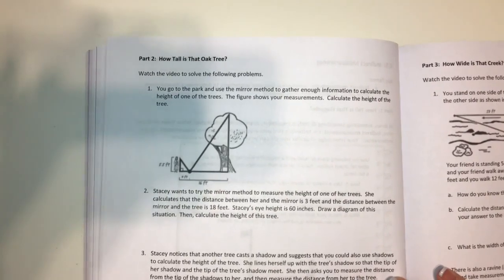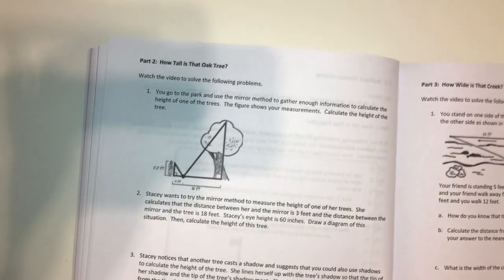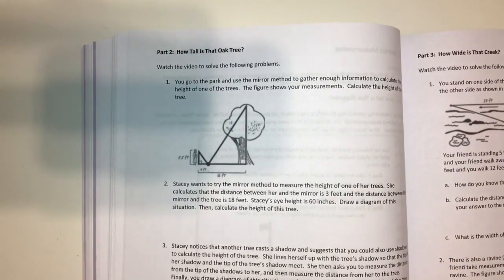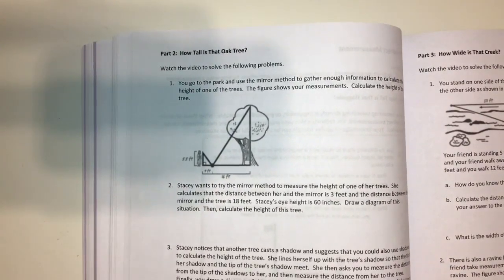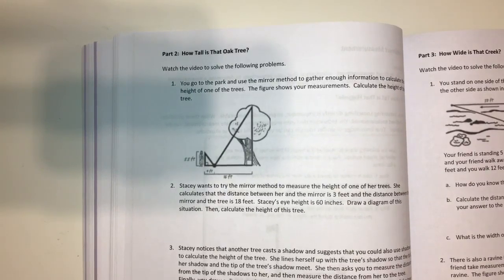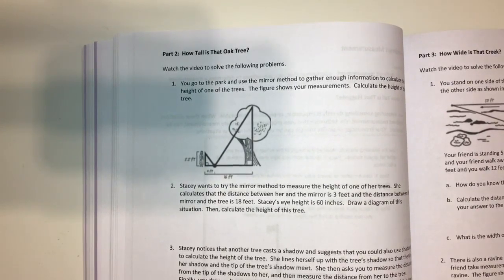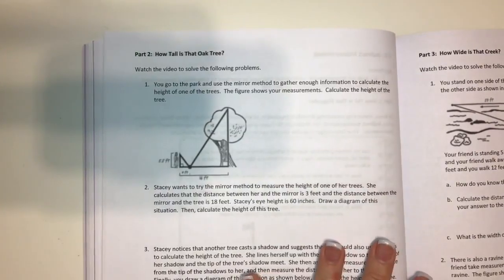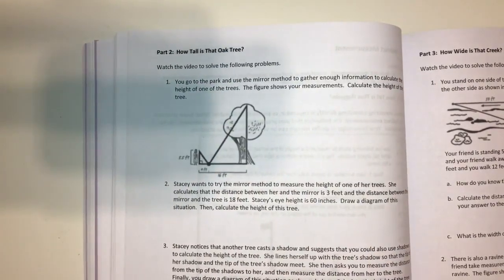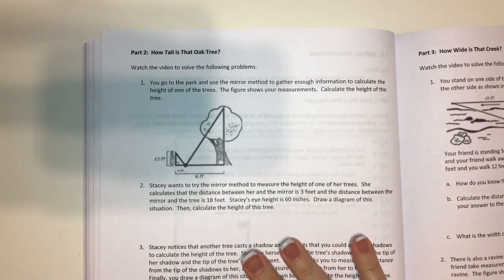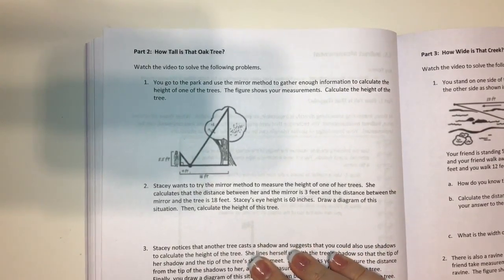So now we have some problems that are using indirect measurement. Indirect measurement is great because sometimes it's not very easy to get a ladder out and calculate and measure how long a tree is, or how tall a tree is. So we can use some indirect measurements to actually calculate that information for us. And these are some more real life scenarios where you might actually use indirect measurements.